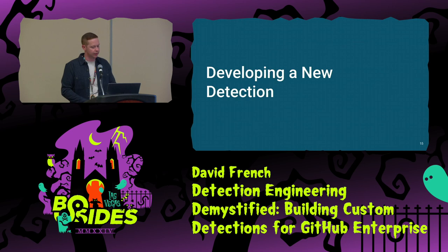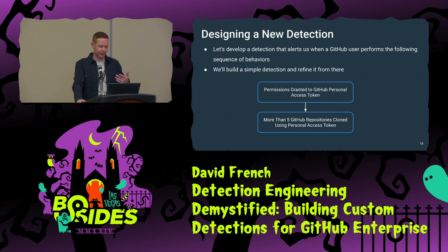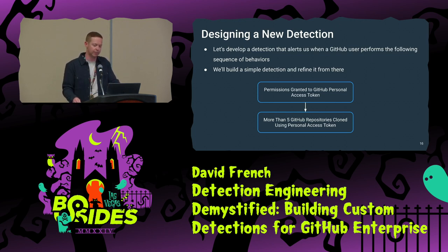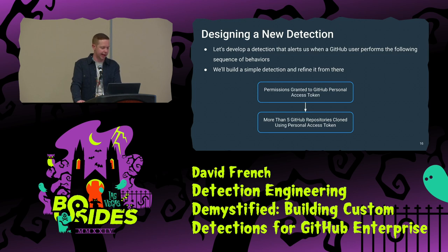Let's develop a new detection to alert us if that specific behavior occurs in our environment. We're going to detect the following atomic behaviors in sequence — think of these as building blocks for your detection logic. By combining multiple atomic behaviors, you can create more complex detection rules that alert on patterns or sequences of activity. The first behavior is access being granted to a personal access token. The second is that same user account being used to download more than five GitHub code repos. We'll build this simple detection and expand from there.